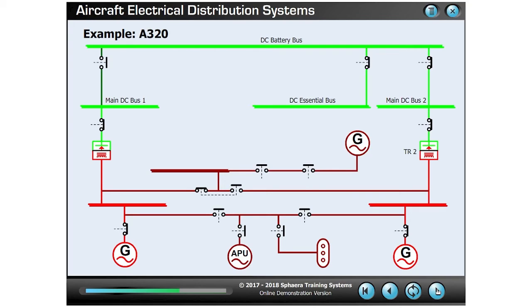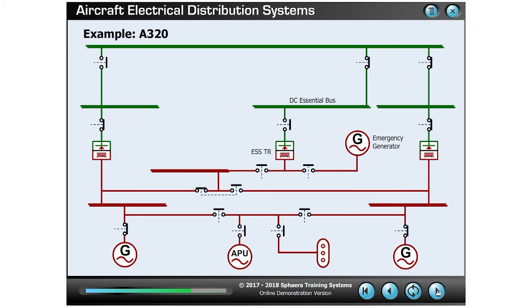The third transformer rectifier, known as the essential TR, is used to supply the DC essential bus from the emergency generator in the event of all three main generators failing.